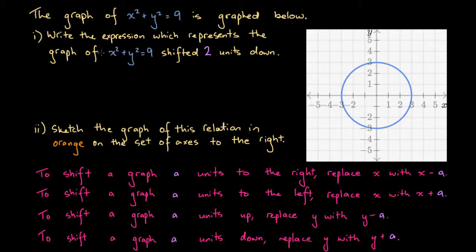Write the expression which represents the graph of x squared plus y squared equals 9 shifted 2 units down. Well if we want to shift something down what we do is we go to our rules here and figure out which rule applies. This first rule is about shifting a graph a units to the right. This is about to the left. This one's a units up and this one's a units down. So we're going to use this last rule. It says to shift a graph a units down where a is some real number, replace y with y plus a.